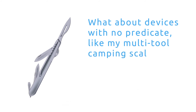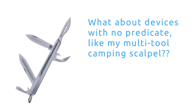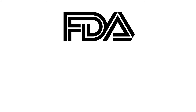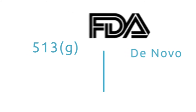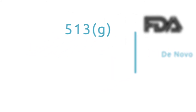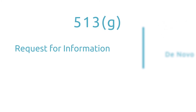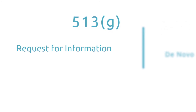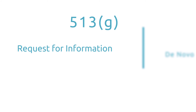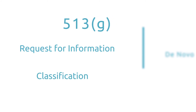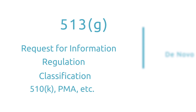But what happens if you have an innovative product and can't find the product code that matches it? You have two options. You can first submit a 513G or go through the de novo process. The 513G is a request for information wherein you ask the FDA to evaluate your product information to determine the device classification, the regulation number, and the correct pathway to market.